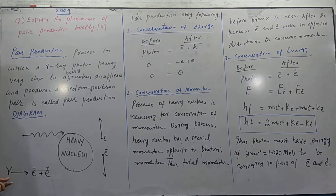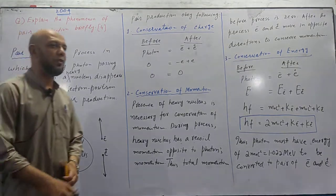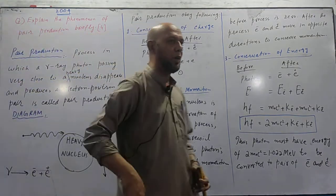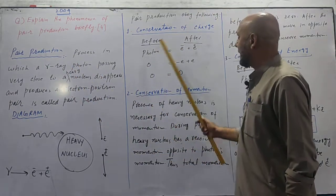Process before: gamma ray. Process after: electron and positron. Whenever any physical process happens, it obeys the laws of physics. So this process also obeys three laws.